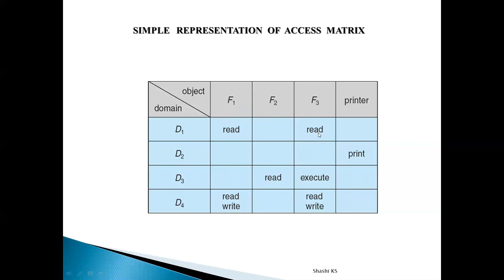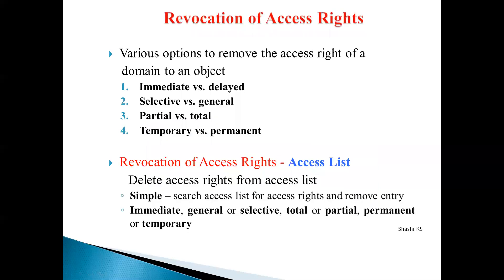Revocation of access rights means whenever the object owner — where object means resources like a file, printer, or CPU — decides to revoke access rights to objects that are shared by different users, how can we do the revocation in the access matrix implementation? That is what is being dealt with in this topic.